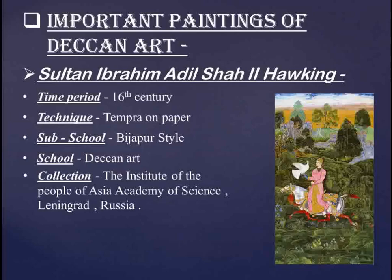Sultan Ibrahim Adil Shah 2nd is riding on his horse and holding a hunting hawk. He was a famous ruler and he had a hunting hawk with him. He is shown in the horse in a dense forest setting, wearing a Mughal-style costume.